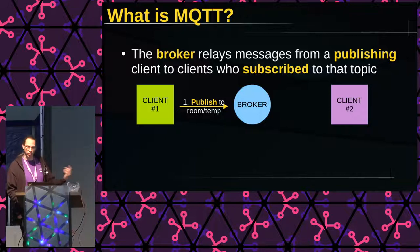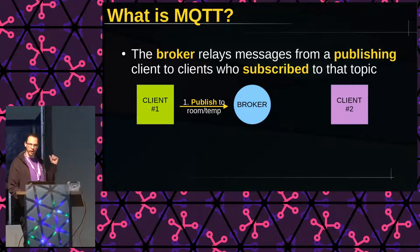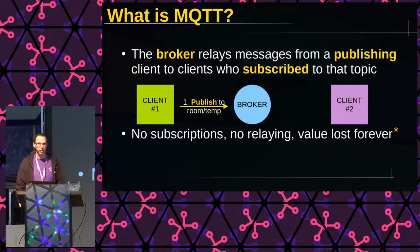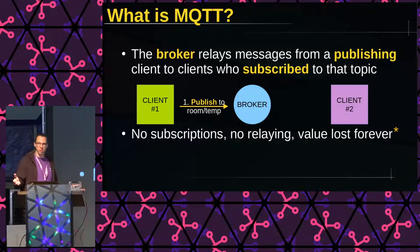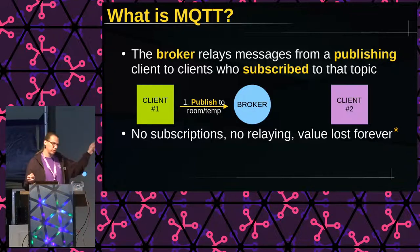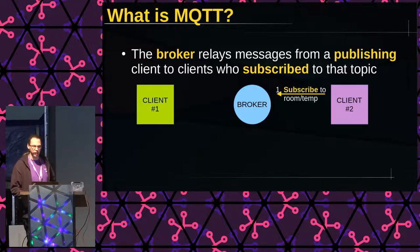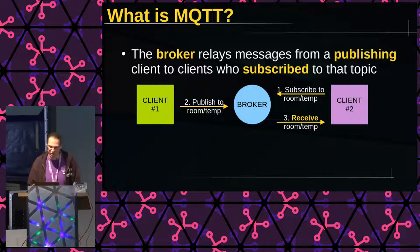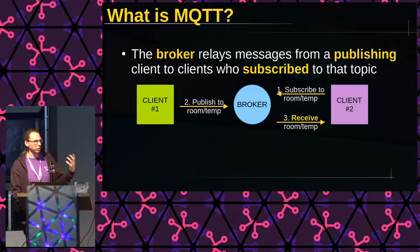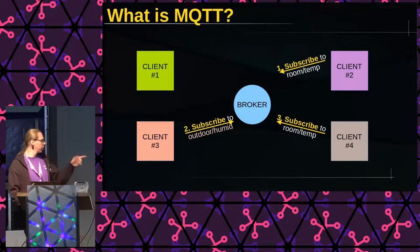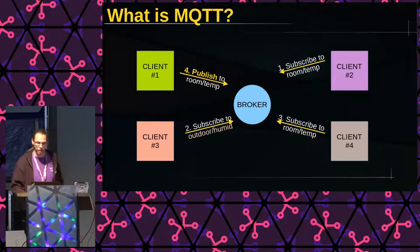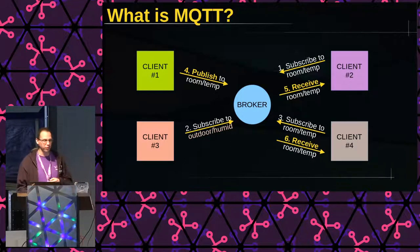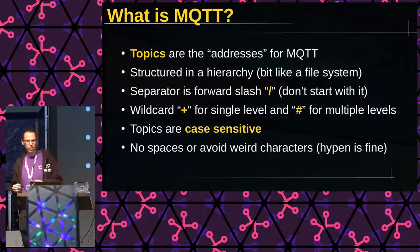If we visualize that, we see we have a broker in the middle and two clients. If client one on the left publishes something to the topic 'room temperature', the message gets sent to the broker and nothing happens — there is no subscription, and the message is lost forever. But first we need some clients to subscribe to the topic. Then if there is a publish on that same topic, the broker will relay the message to client two, who now gets the updated value. This also works with multiple clients. Only clients subscribed to that specific topic will receive messages.